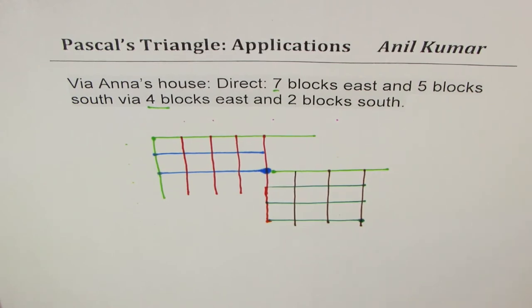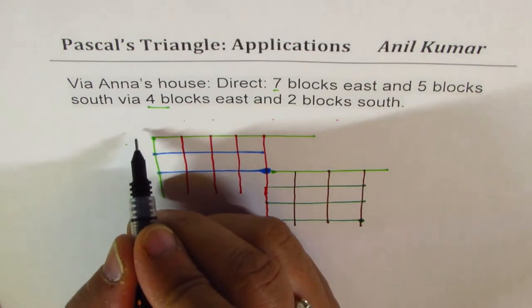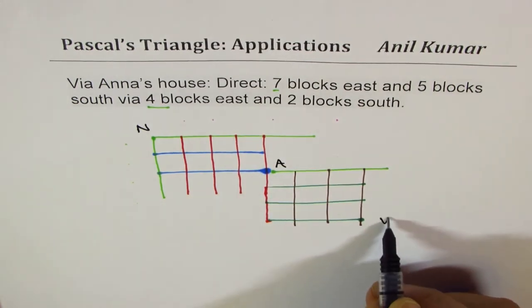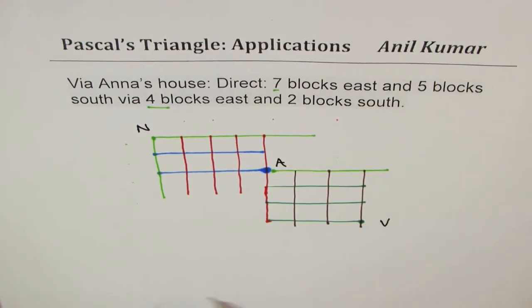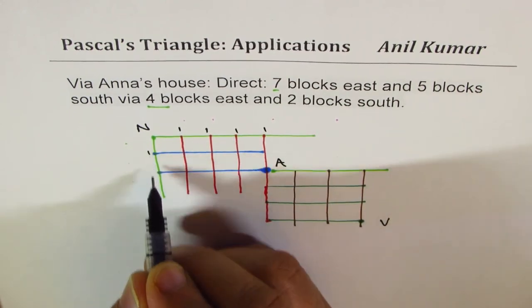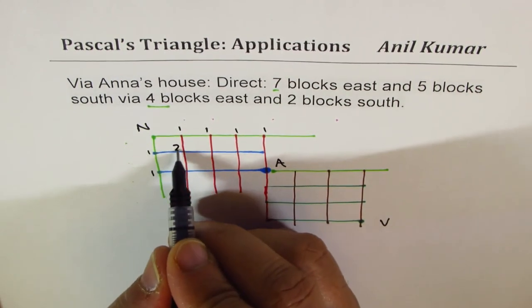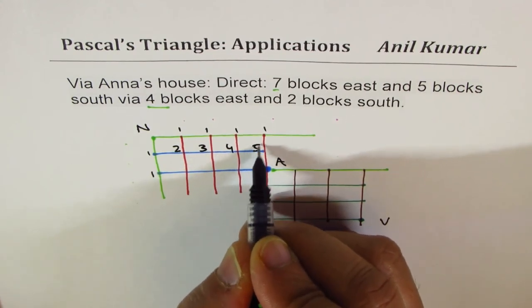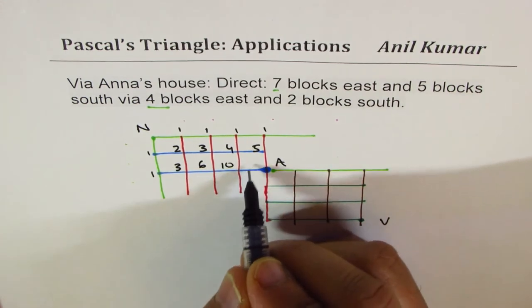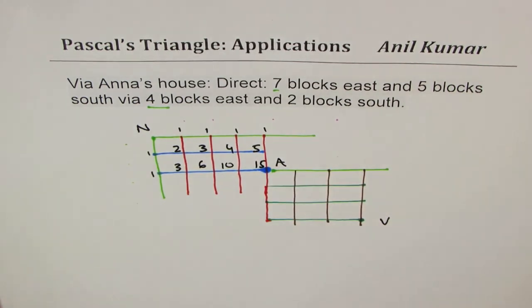Let me extend this line also. Now let's work out, again same strategy. That is Nirvan, this is A for Anna and this is V for Vishu. So while going only east or south, it is one, one, one, one. When you add them, you get two, two plus one is three, three plus one is four, four plus one is five, one plus two is three, three and three is six, six plus four is ten, ten plus five is fifteen. So there are fifteen ways to reach Anna's house.